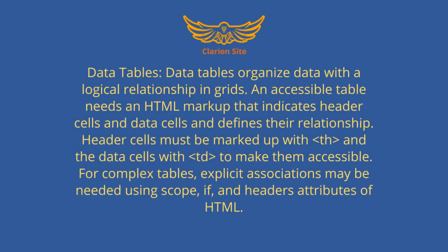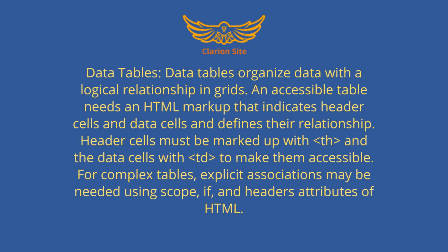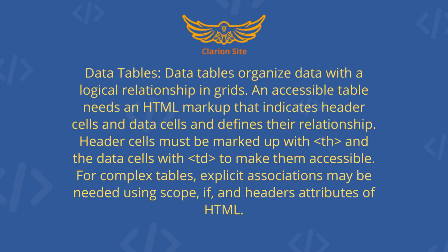Data tables. Data tables organize data with a logical relationship in grids. An accessible table needs HTML markup that indicates header cells and data cells and defines their relationship. Header cells must be marked up with TH and data cells with TD to make them accessible. For complex tables, explicit associations may be needed using scope, id, and headers attributes of HTML.